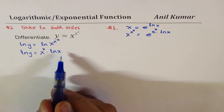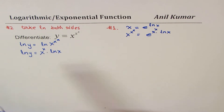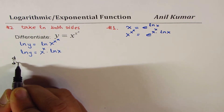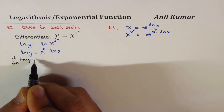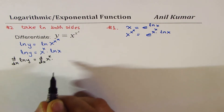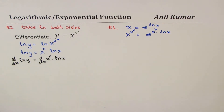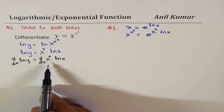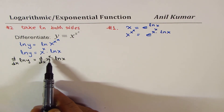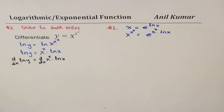Now let's differentiate both sides with respect to x. We get d/dx of ln y equals d/dx of x to the power of x times ln x. Here we have to apply the product rule, so we need to know the derivative of x to the power of x.